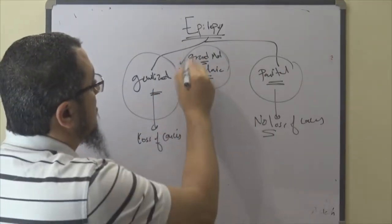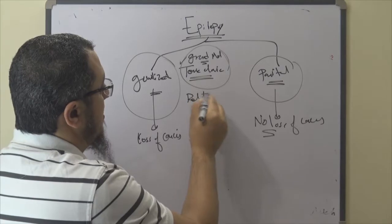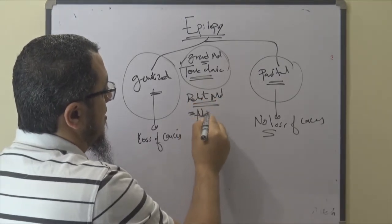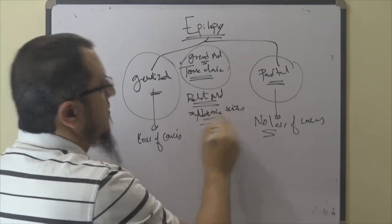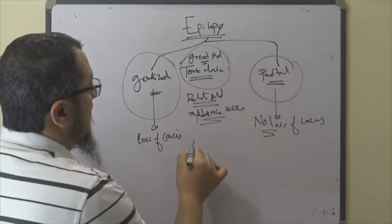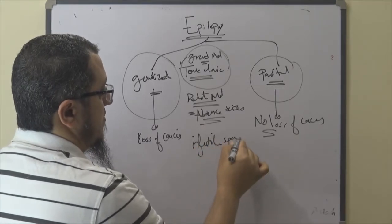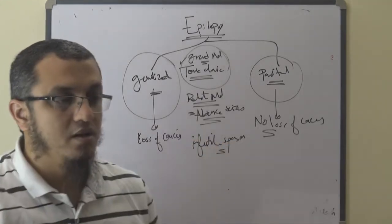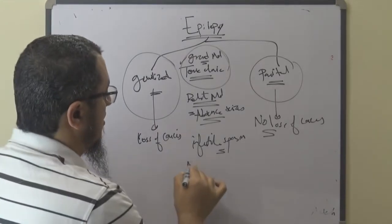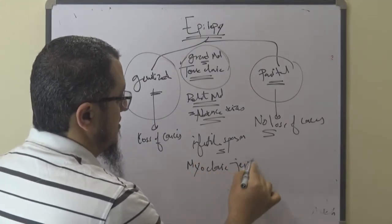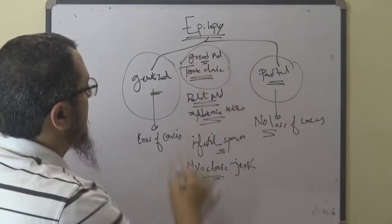And petite mal. Grand mal and petite mal, also known as absence seizures. And infantile spasm, and myoclonic jerk. The most common types, and all of this is generalized type of epilepsy.